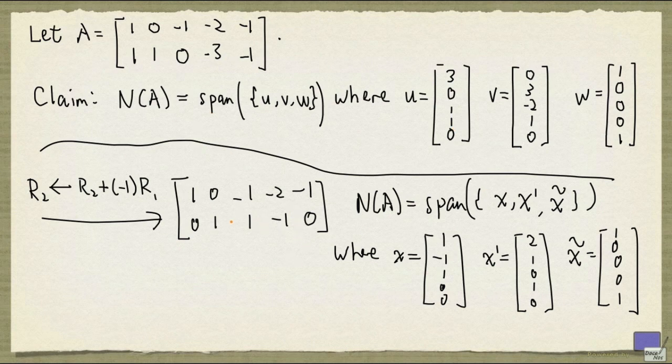If the claim is true, we must be able to write each of x, x prime, and x tilde as a linear combination of u, v, and w. Right?